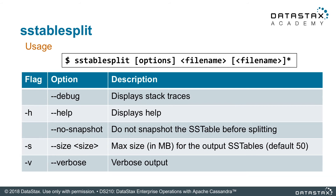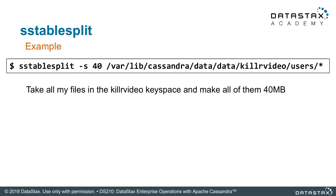Really what you want to do is say: here's a file name, here's the size that I want, go do it. This command that you see in front of you is essentially taking every single SSTable in the users table in the killer_video keyspace and breaking them up into 40 megabyte chunks — just breaking them all down. This is a good example of say you did a major compaction or something really bad on that one keyspace.